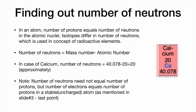Next, finding out the number of neutrons — in an atom, the number of protons roughly equals the number of neutrons in the atomic nuclei. Isotopes differ in the number of neutrons, which is the concept used in radioactive elements. Number of neutrons = mass number − atomic number. For calcium, the atomic number is 20 and the mass number is 40.078, so number of neutrons = 40.078 − 20 = 20.078, approximated to 20. Note: number of neutrons need not equal number of protons, but in a stable uncharged atom the number of electrons must equal the number of protons.